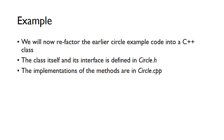Now we'll go through an example where we refactor the circle example code from C functions into a C++ class. We're going to create two extra files: circle.h, where the .h tells us it's a header file — this will contain the interface and define the class — and circle.cpp, which will contain the actual implementation of those methods. So we need to create two separate files: circle.h and circle.cpp.